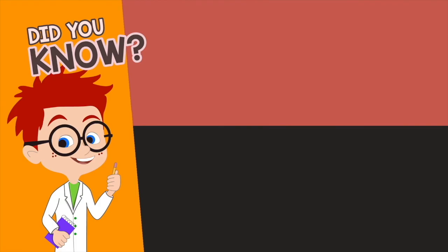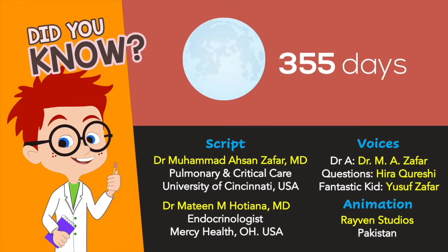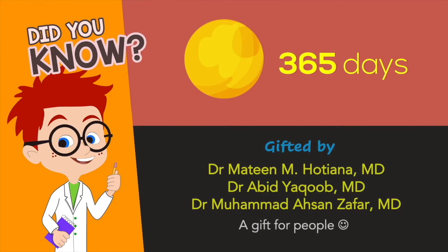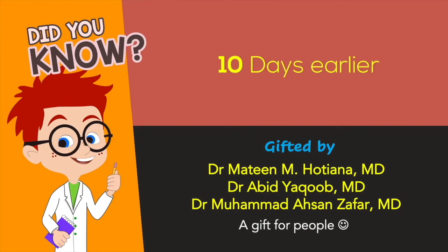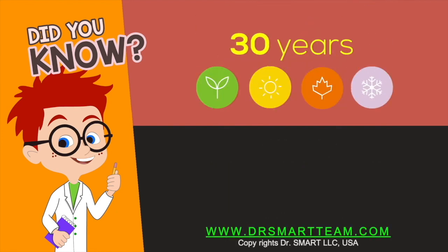Did you know the lunar calendar has 355 days and is 10 days shorter than the solar calendar? This is why Ramadan comes 10 days earlier every year. In 30 years you will get to fast in all 4 seasons. How amazing is that?